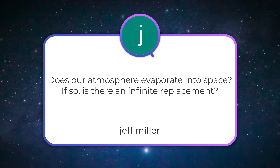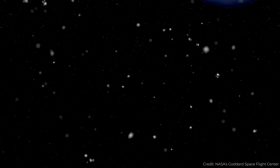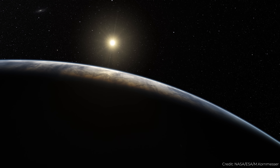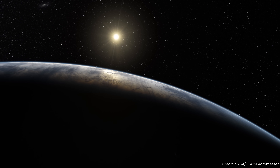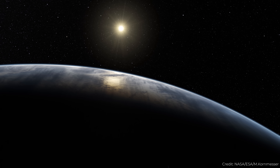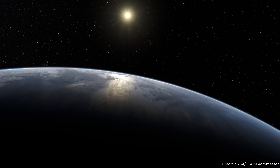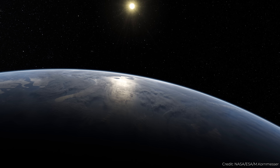Jeff Miller asks: does our atmosphere evaporate into space? If so, is there an infinite replacement? Yes, we are losing atmosphere to space. We're gaining about 100 tons of debris from meteorites crashing into the Earth, and we're losing about the same from gas escaping from the Earth. Is it being replenished? No, it's not. The Earth's atmosphere is slowly bleeding off into space, but it will last a lot longer than the life of the sun. It is kind of being replenished through the carbon cycle, through oxygen, various creatures on Earth — but the molecules that are being lost to space are not coming back. It won't have an effect over the entire lifetime of the planet Earth.